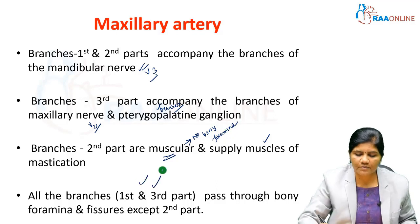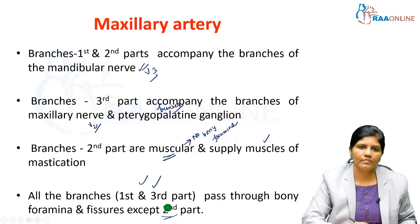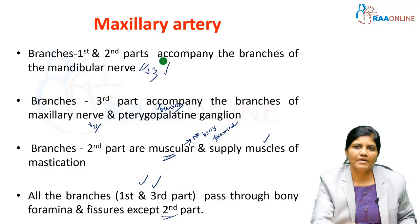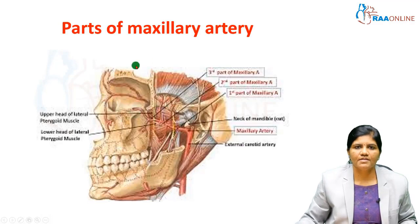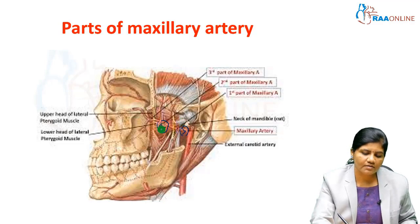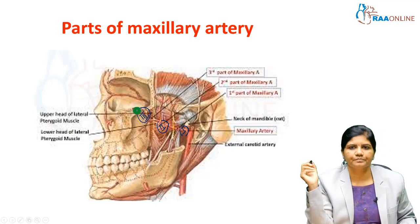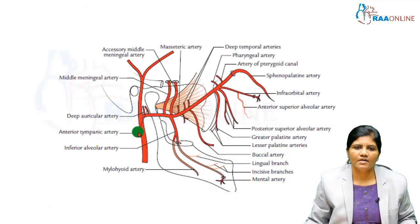The branches of the first and third parts pass through many foramina and fissures. To summarize: the first and second parts accompany branches of the mandibular nerve, and the third part accompanies branches of the maxillary nerve and the pterygopalatine ganglion. There are five branches from the first part. The maxillary artery originates behind the neck of the mandible.